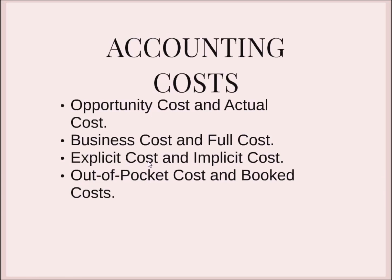The third concept is explicit cost and implicit cost. Explicit costs are those costs which are incurred by the firm in payment of labor, material, plant, building, machinery, equipment, etc. — they are recorded in the books of accounts. Whereas there are certain other costs that do not take the form of cash outflows nor do they appear in the accounting system. Such costs are implicit costs. For example, opportunity cost is a type of implicit cost.